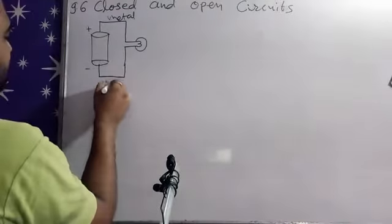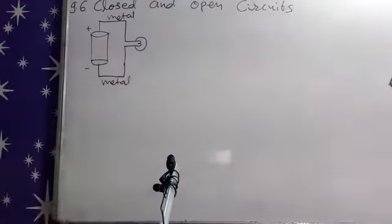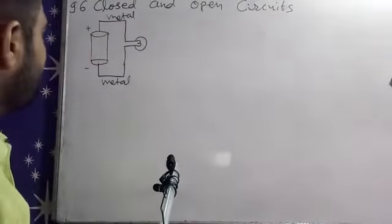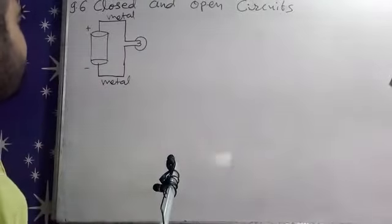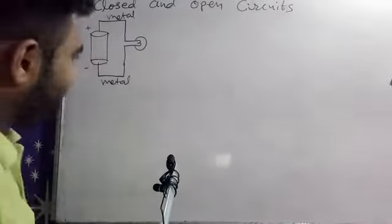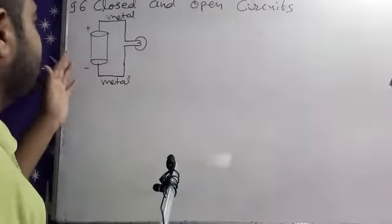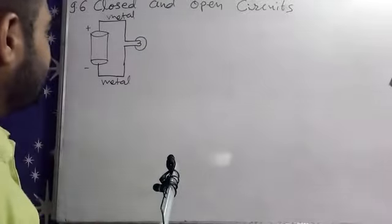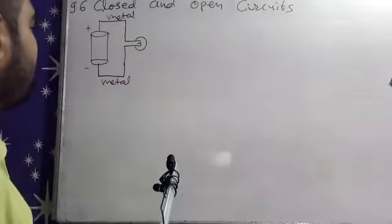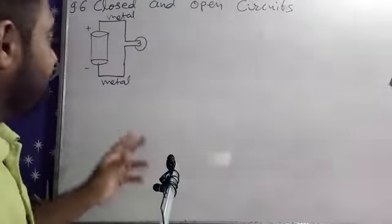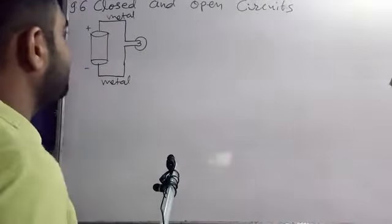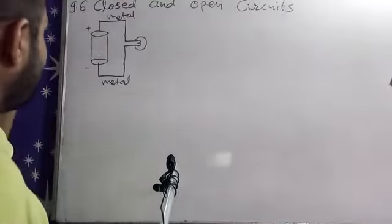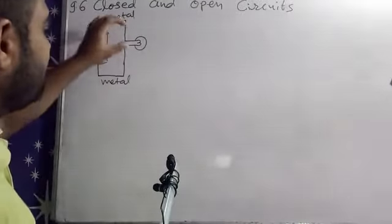This is also metal wire. From this diagram we can see that this circuit is complete — positive and negative are connected — so current is flowing through it. Because the metal wire is used and the circuit is closed, current flows throughout this circuit. That's why in this example, the bulb glows.